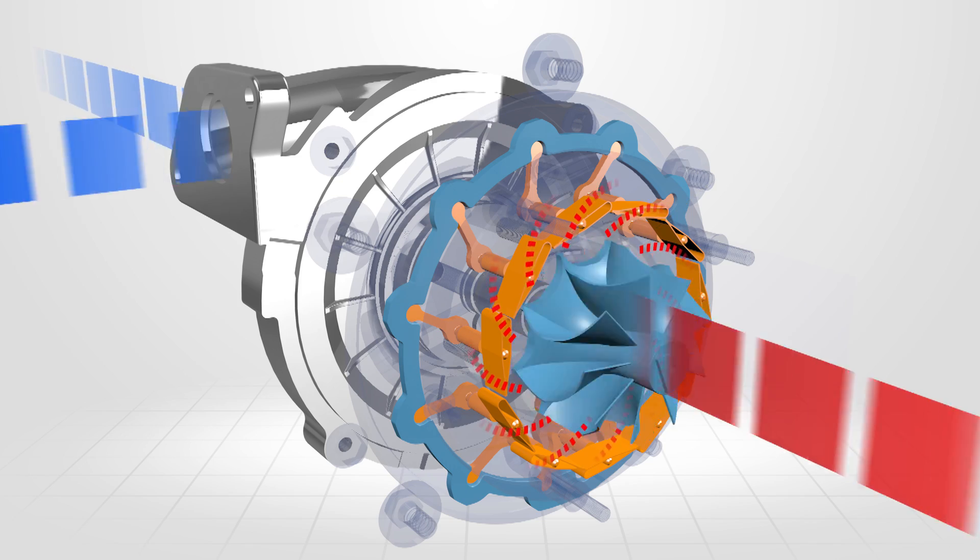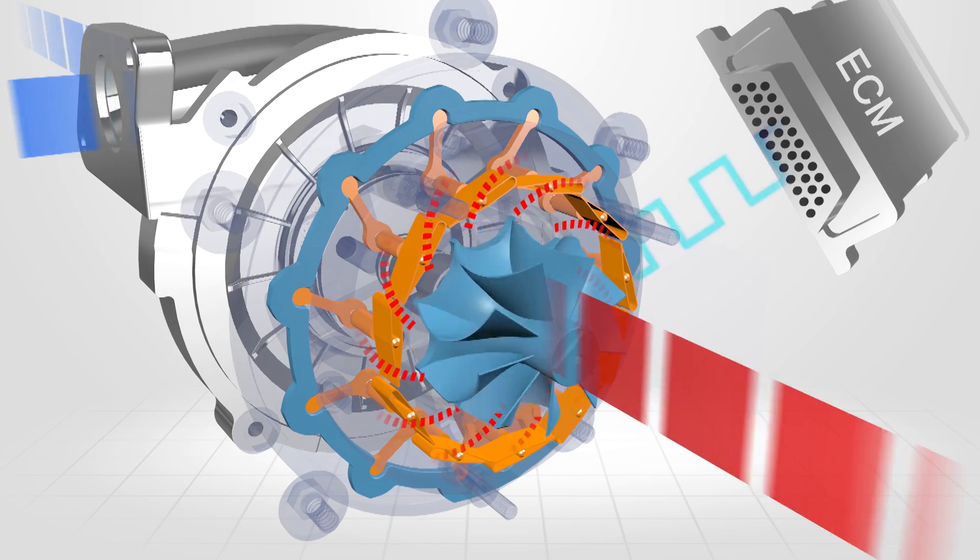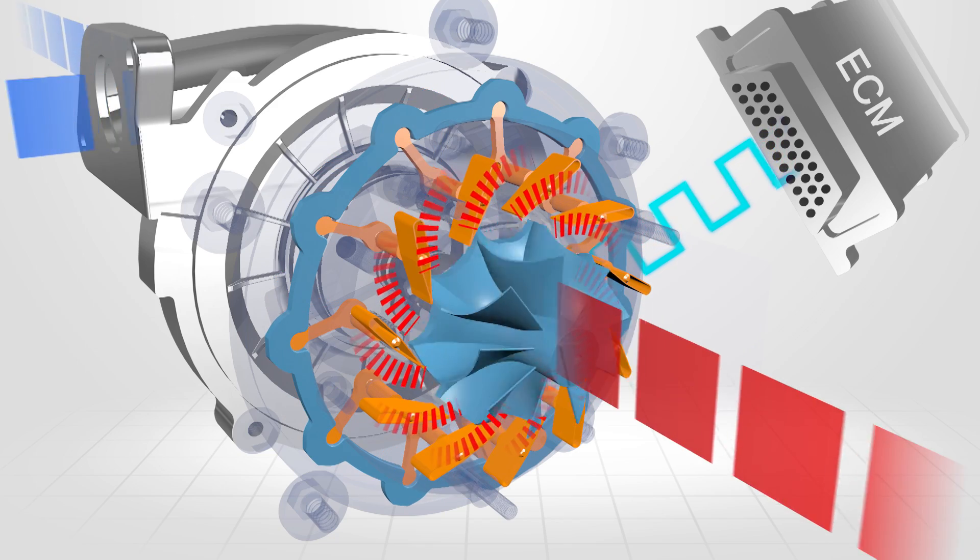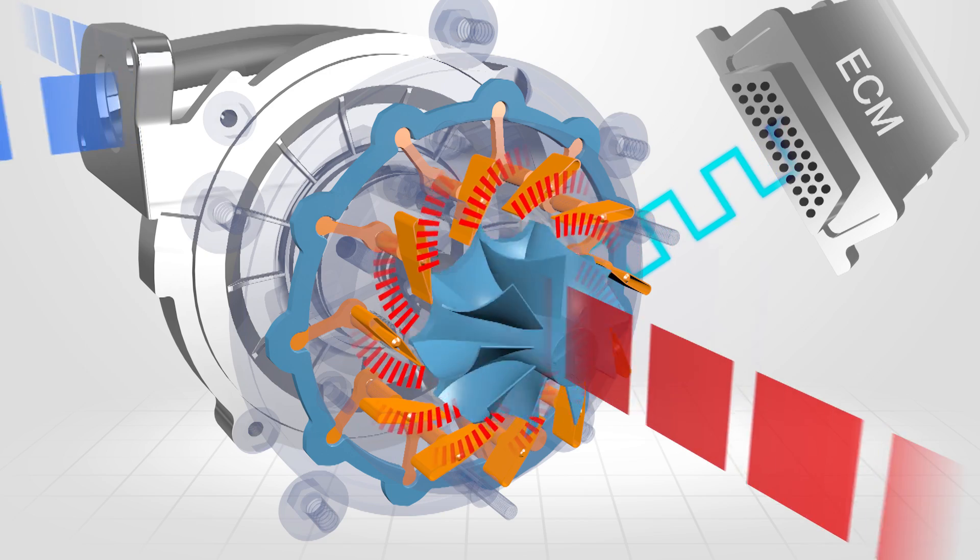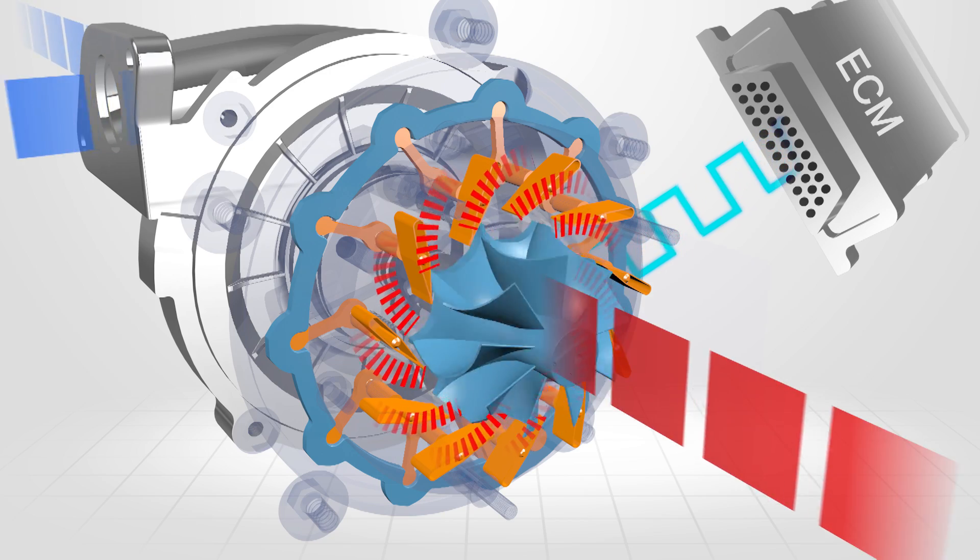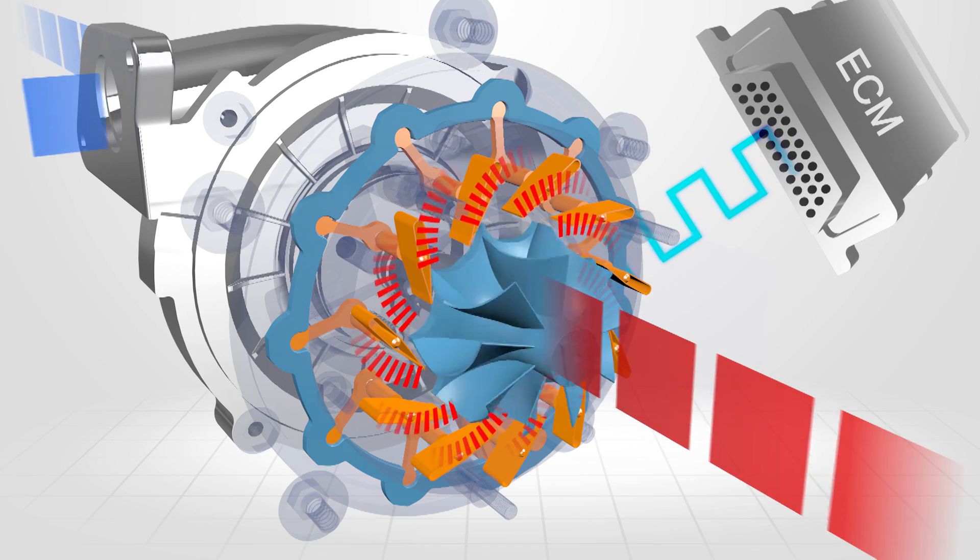To control the amount of boost, the ECM can move the vanes to an open position, changing the angle the exhaust gas hits the turbine blades. Due to this alteration and nozzle positioning, the turbine speed has now been reduced.